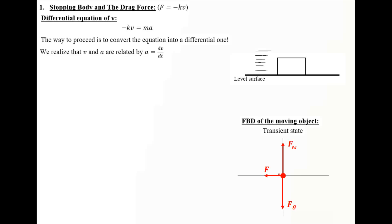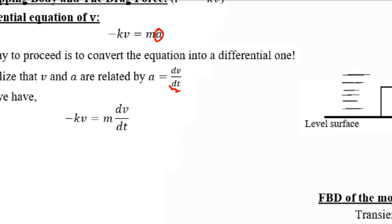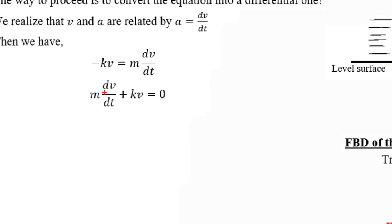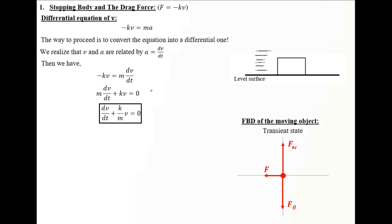We realize that V and A are related via calculus by A equals dV/dt. Then we have minus KV equals M dV/dt. We transform A to dV/dt because we are interested in the differential equation governing the variation of V, not A. Rearranging, and remembering the derivative must be in canonical form with a coefficient of 1, we divide by the mass. That gives us the first-order differential equation in V.